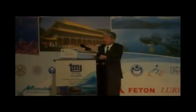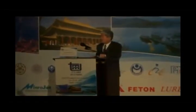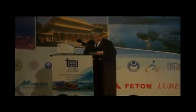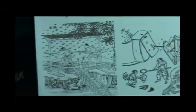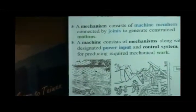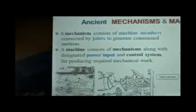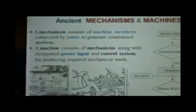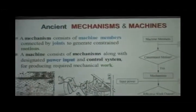In the community of mechanism and machine science, we all know that a mechanism consists of machine members connected by joints to generate constrained motions — so it creates motions. A machine consists of a mechanism along with some input power and control assistance for the production of the required mechanical work.